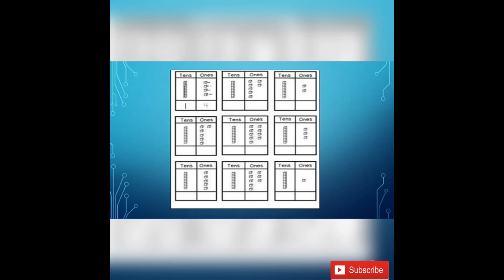Okay students, do with me. I have a bar of 1 in the 10s place — 1 ten. And how many left? 1, 2, 3, 4 — 4 ones. 1 ten and 4 ones make 14. Counting more: 1, 2, 3, 4, 5, 6, 7 — 7 ones. 1 ten and 7 ones make 17. And another: 1 ten and 2 ones make 12.